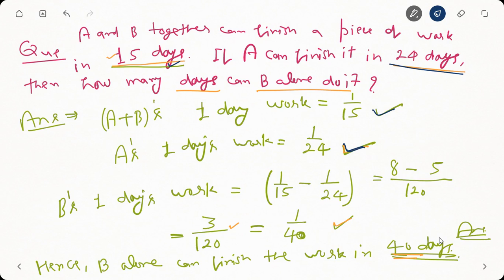B's one day work equals one by fifteen minus one by twenty-four. Taking LCM of fifteen and twenty-four, which is one hundred twenty: that gives eight over one-twenty minus five over one-twenty, which equals three by one-twenty, simplifying to one by forty. So B's one day work is one by forty, meaning B will take forty days to complete the whole work alone.